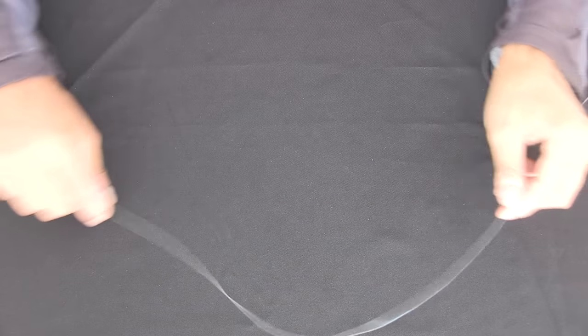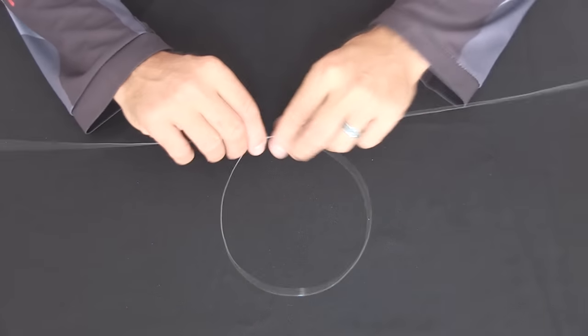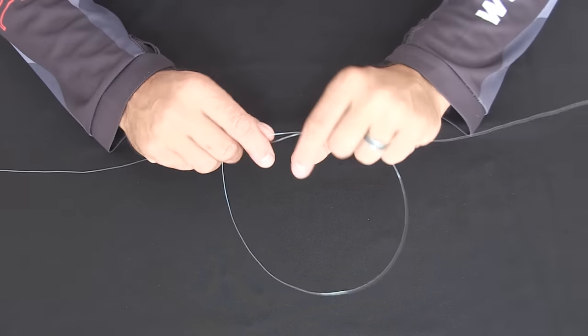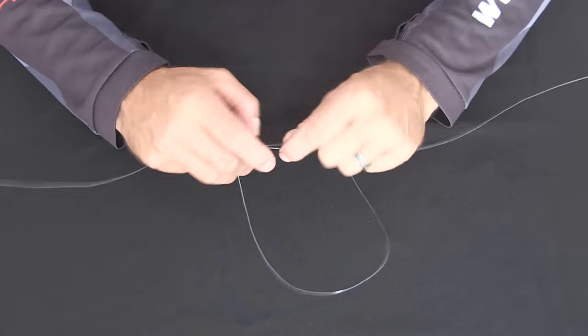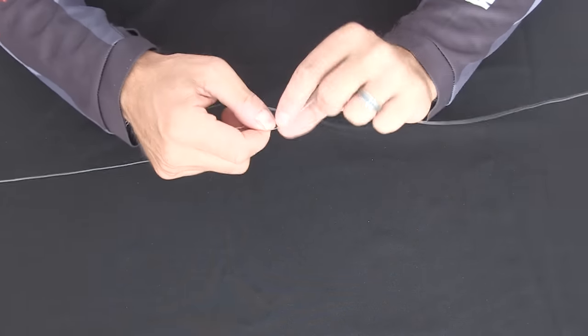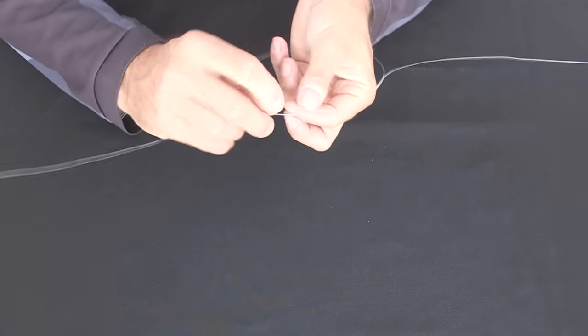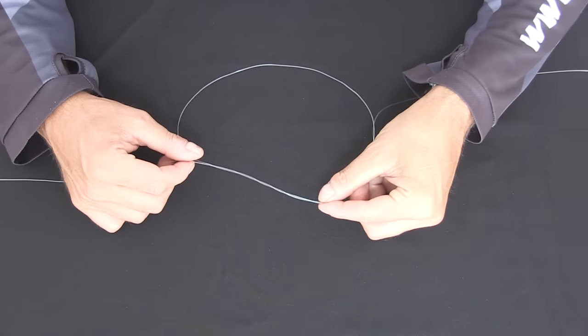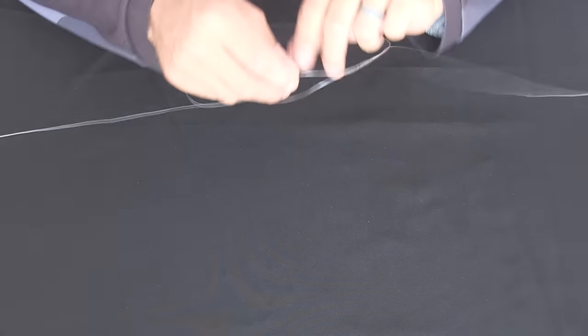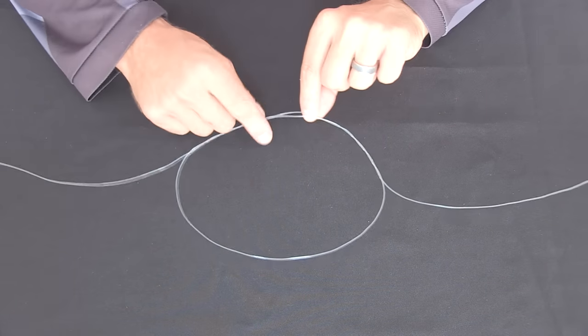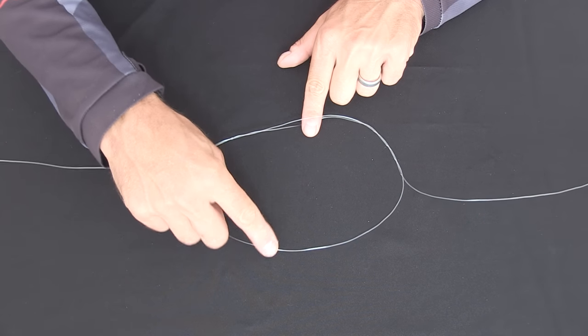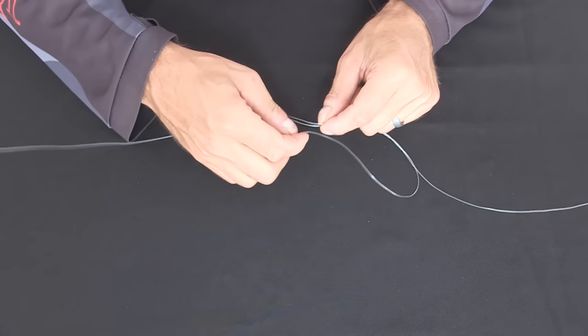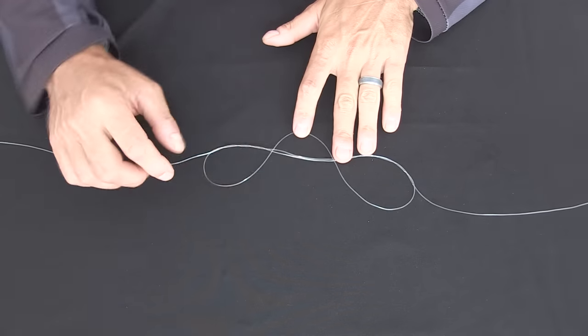So we come up, create our loop and then we begin to twist the line over the top of one another between our fingers. We want to do that six to eight times. You see that we've kept the line parted. We now have the dropper loop like so. We're going to grab the end of our dropper loop and pass that back up through where the parted line is. Like that.